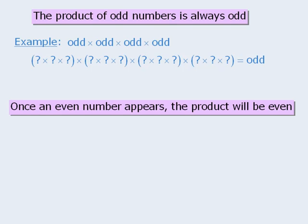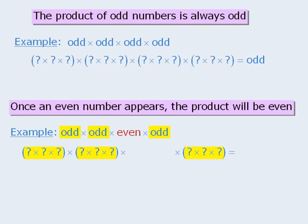Now let's examine the second rule: once an even number enters the picture, the product will always be even. We'll take all of the odd numbers and find their prime factorizations — since they are odd, none include any 2s. Now we take the even number and find its prime factorization. Since this number is even, its prime factorization must include at least one 2. When we examine the entire product, it includes at least one 2, meaning the product is divisible by 2, so the product must be even.